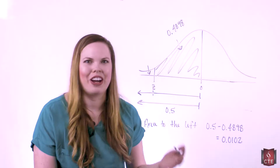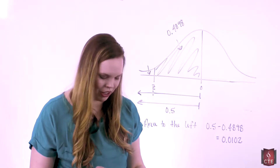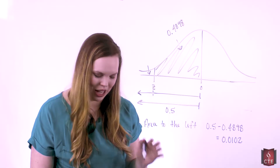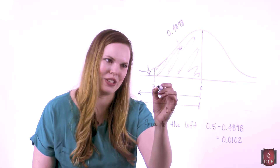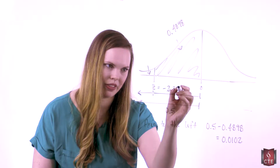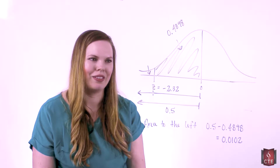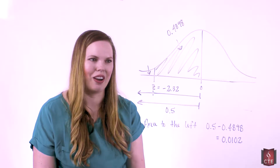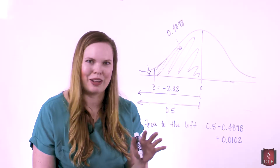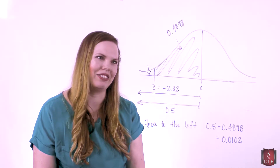With the area to the left equal to 0.0102, go to the table, find what row it's in and what column it's in. You should find it in the negative 2.3 row and the 0.02 column, which makes z equal to negative 2.32. It's kind of like a word search — you're looking in the body of the table and figuring out where it is along the edges for your z-scores.